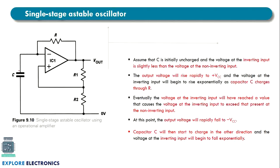Assume the capacitor is initially uncharged, so the voltage at the capacitor is zero. At this stage the voltage at the inverting input terminal is less than the voltage at the non-inverting input terminal, due to an offset voltage at the op-amp output. Comparing the two terminals, the non-inverting terminal is greater, so the output rises to plus Vcc.